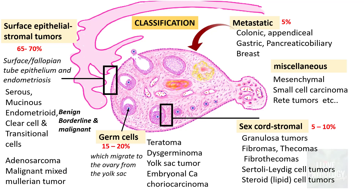If you recollect the classification which we had discussed in the earlier sessions, the ovarian tumors are classified into surface epithelial tumors, germ cell tumors, sex cord stromal tumors, metastatic tumors, and miscellaneous tumors. In the last few sessions we had completely covered the surface epithelial tumors.